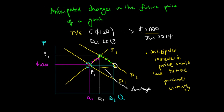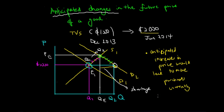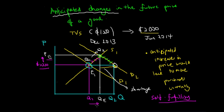The new equilibrium is at price PE and quantity QE. Originally the equilibrium quantity was at Q1, and now this has moved to Q2. What this actually suggests is that anticipated changes in the future price would be a self-fulfilling prophecy — because we anticipate increases in the future price of a good, the actual price increases from $1,000 to the new equilibrium PE, and the corresponding quantity traded also increases from Q1 to QE.